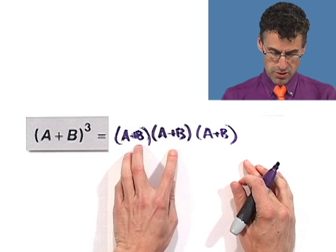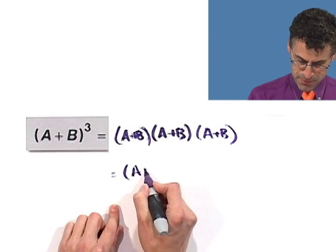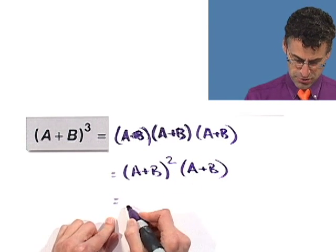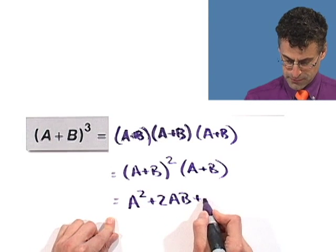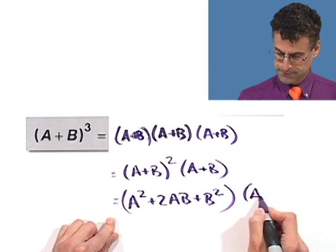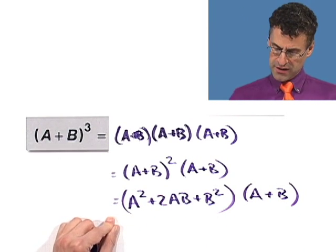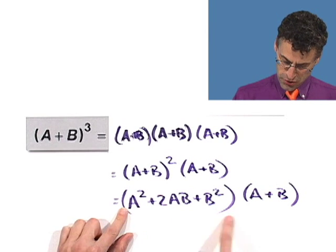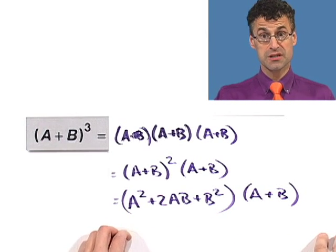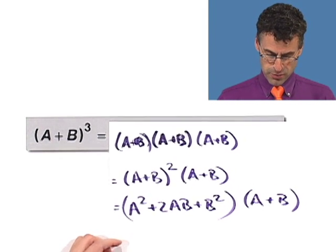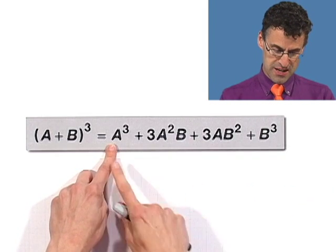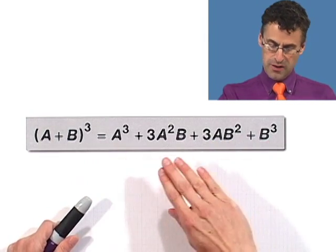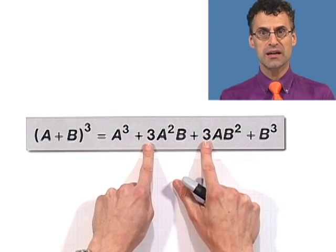These two copies can be written as a plus b squared times a plus b. And a plus b squared equals that formula I showed you. Now all you've got to do is take this a and distribute it all the way through, take the b and distribute it through, and add up those monomials, like terms, and so forth. So there's the formula: a cubed plus 3a squared b plus 3ab squared plus b cubed. You see a certain pattern to it, and the coefficients are three.